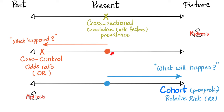In a case control study, we live in the present but ask about the past. For example: do you have lung cancer today? Yes. Have you smoked in the past? Or do you have mesothelioma today? Were you exposed to asbestos in the past? We perform case control studies to find out the odds ratio — does exposure to asbestos increase the odds of developing mesothelioma? It's called a ratio because it has a numerator and a denominator — you divide.